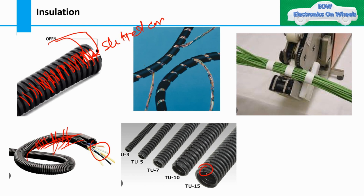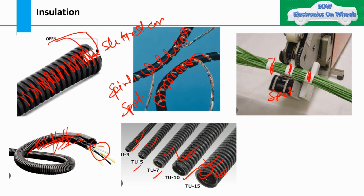These are some diameters of corrugated tube: TU15, TU10, TU7, TU5, TU3. Based on your bundle diameter, it is decided which size of corrugated tube you are going to use. There is also spiral tape and sport tape. Spiral tape is wrapped around the wires and has more strength and assembly strength than sport tape. Sport tape is generally given over the corrugated tube - if the corrugated tube is open, we just give sport tape over it to close it so the wire does not come out.